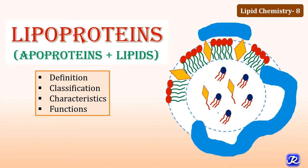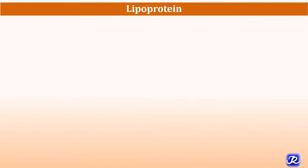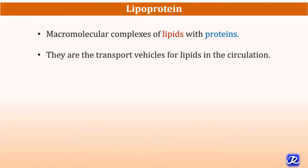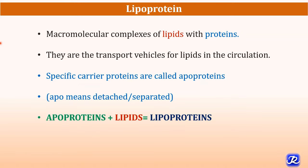In this video we are going to study about lipoproteins. Lipoproteins are compound lipids — a complex of lipid plus proteins. Lipids are insoluble in water, so to facilitate their transport they are carried as lipoproteins in circulation. They are macromolecular complexes of lipids and proteins that act as transport vehicles. They contain specific carrier proteins called apoproteins. 'Apo' means detached or separated, meaning the lipoprotein constitutes apoproteins along with lipids.